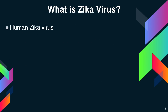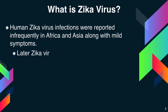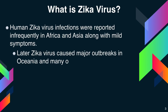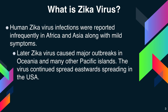Human Zika virus infections were reported infrequently in Africa and Asia along with mild symptoms. Later on, Zika virus caused major outbreaks in Oceania and many other Pacific islands. The virus continued to spread eastward, reaching the USA in the recent 2016 outbreak.